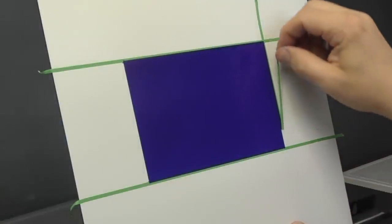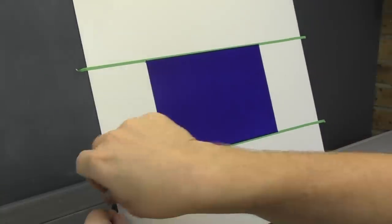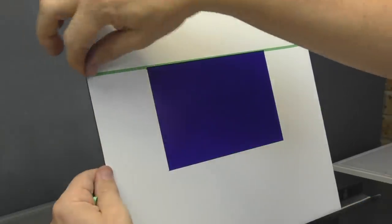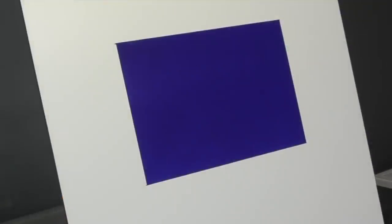Now that that's dry, I'm going to unmask it. You can see a couple of spots on the edges there, mainly on the overlaps, but definitely a nice enough edge.